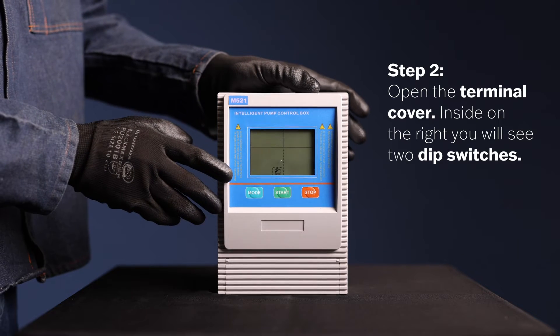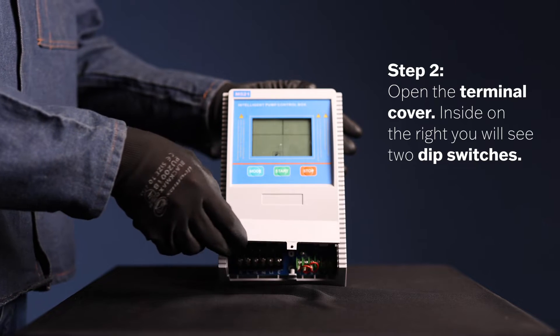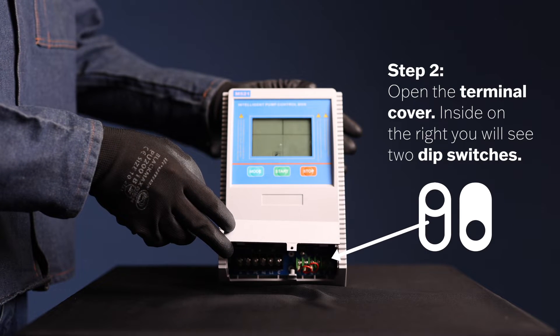Step 2: Open the terminal cover. Inside on the right, you will see two dip switches.